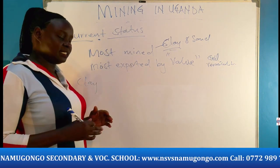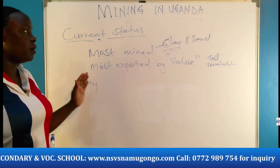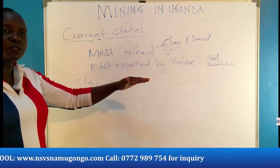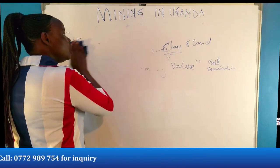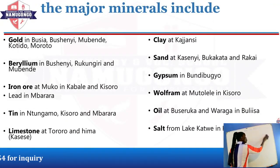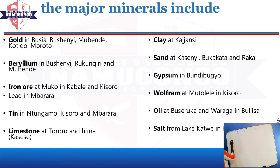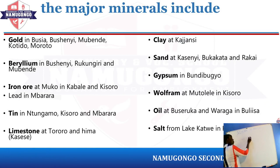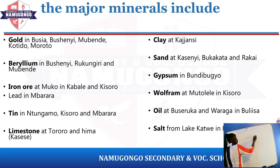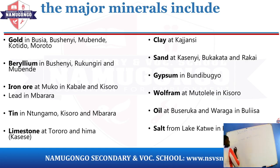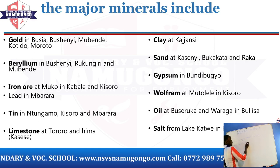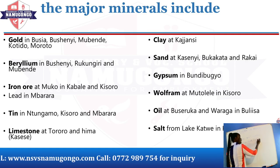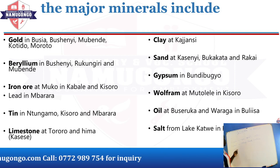We are talking about the current status — briefly, what we know about mining. After showing the examiner that, you have to show the different minerals mined in Uganda today. A student can choose how to write this. You may choose to begin with the district: Kasese — we have copper, cobalt, limestone. Then Tororo — we have clay, sand, and limestone. This is one method of showing the different minerals.